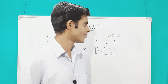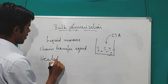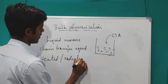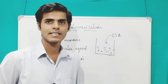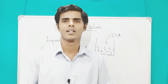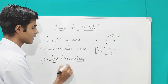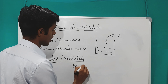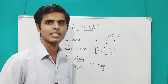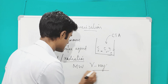Finally, the mixture is heated or radiation is passed, because heat energy or radiation is supplied in order to initiate the reaction and proceed with the polymerization. The heating is done at high temperature, and radiation can be microwave radiation or gamma radiation.